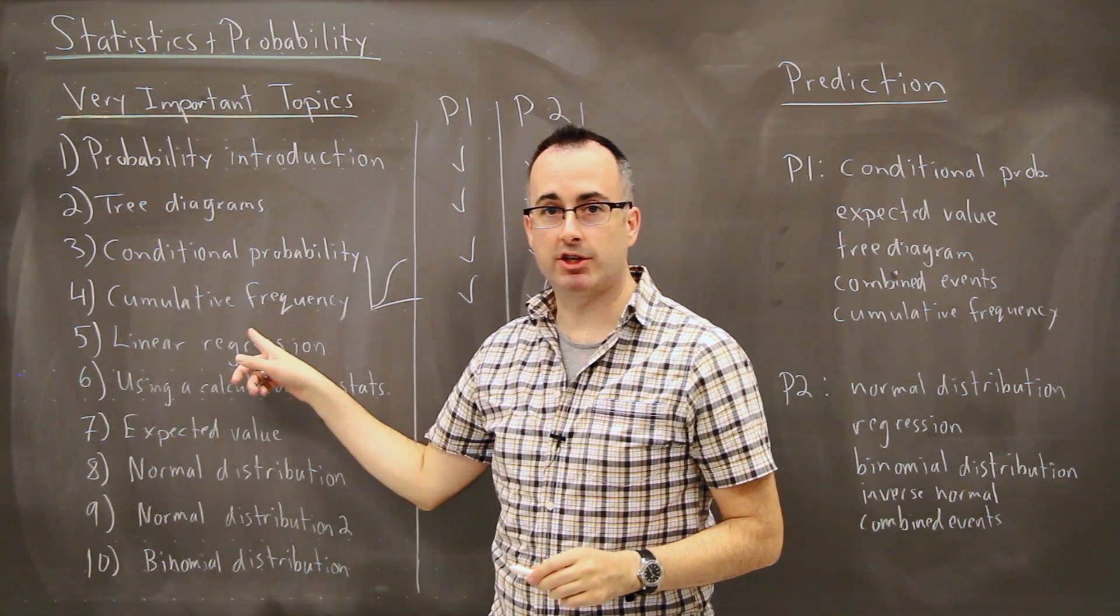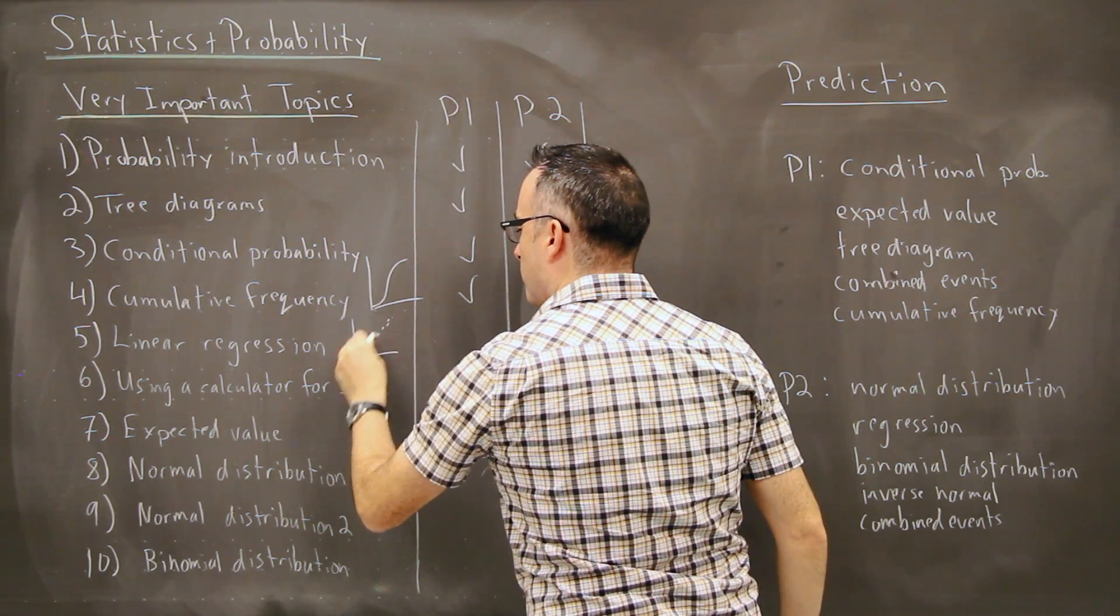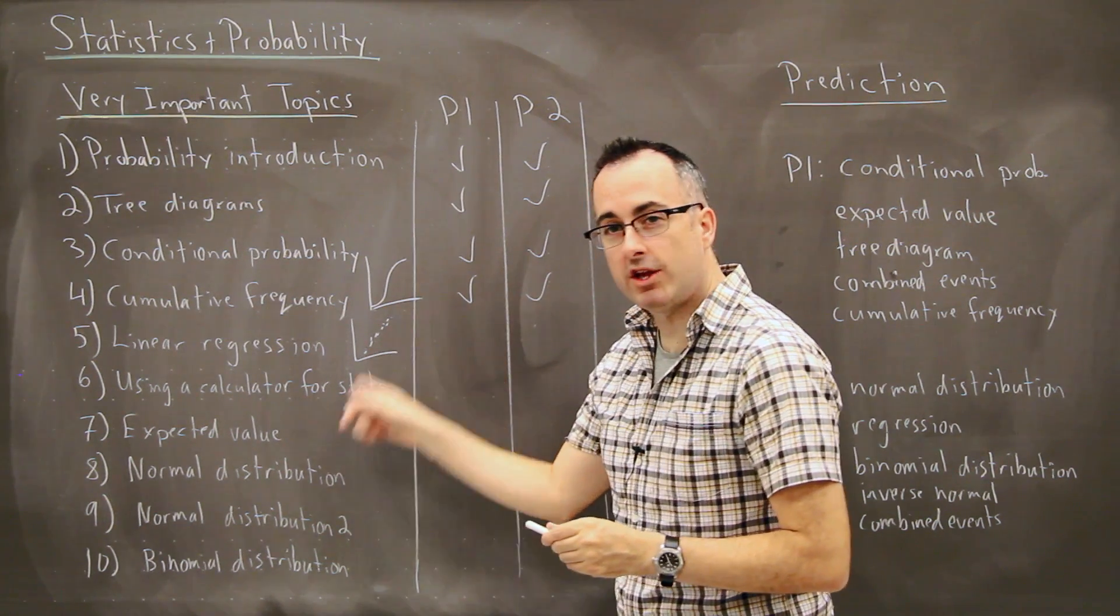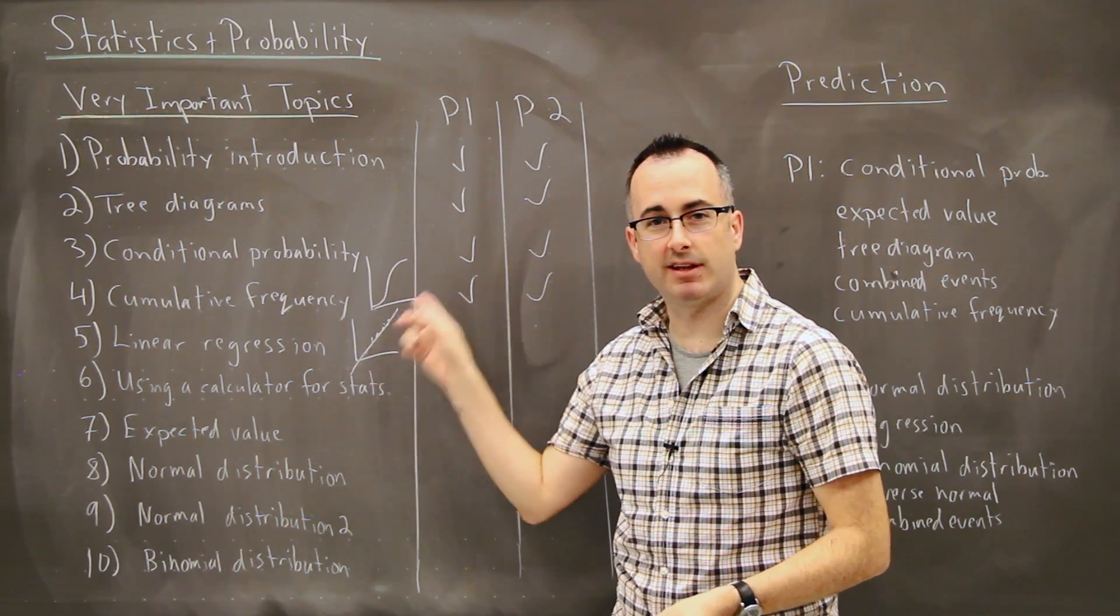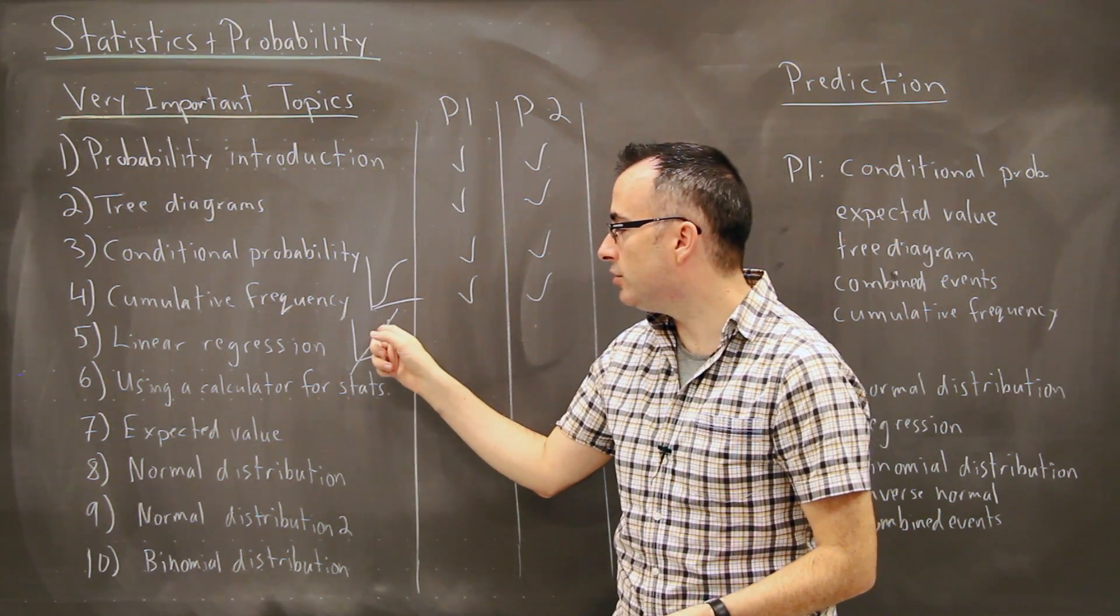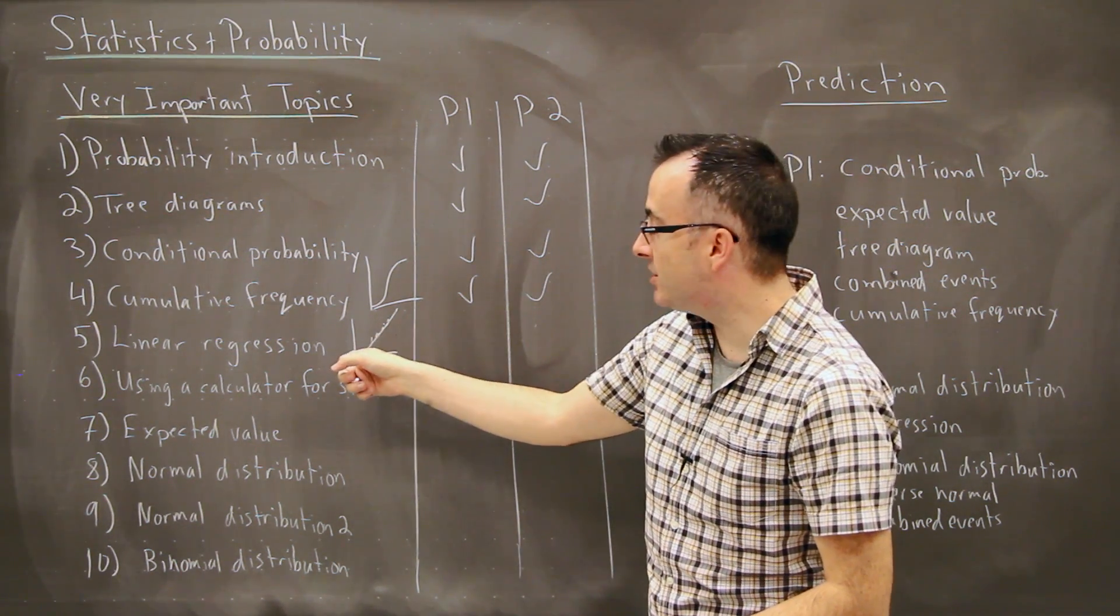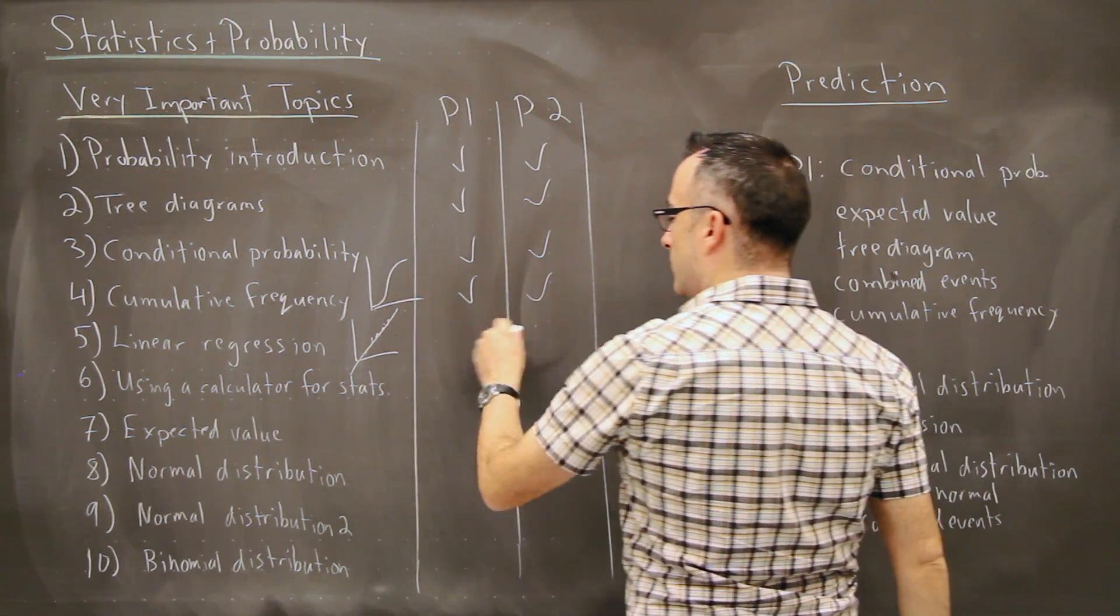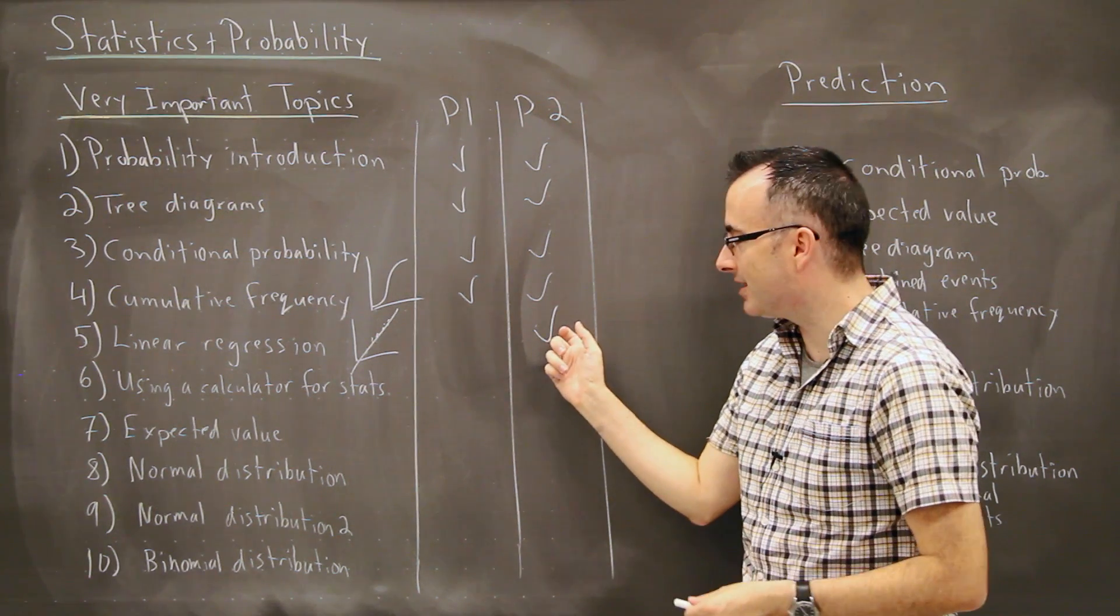Next we have something called linear regression. This is one that you're given a whole bunch of dots or a whole bunch of data points basically. And you're trying to use your calculator to find an equation for this one. So an equation of a line of best fit here. You're also asked to do things like Pearson's correlation coefficient and then using that to predict. This is super easy, I think, but also very, very common. These show up very, very often. They show up on exams and they show up pretty much only on paper two. I hope that makes sense because you need a calculator to do it. So it shows up on the one with the calculator.